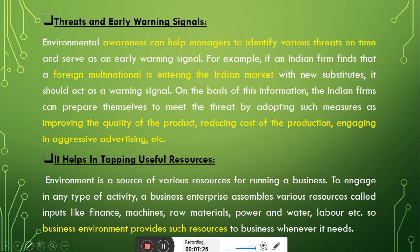Next point: it helps in tapping useful resources. Environment is a source of various resources for running a business. To engage in any type of activity, a business enterprise assembles various inputs like finance, machines, raw materials, power and water, labor, etc. Business environment provides such resources to business whenever it needs them. Because a business operates within a particular surrounding called the business environment, whatever the business needs — raw materials, money, machines, equipment, employees — all these resources are provided by the business environment.